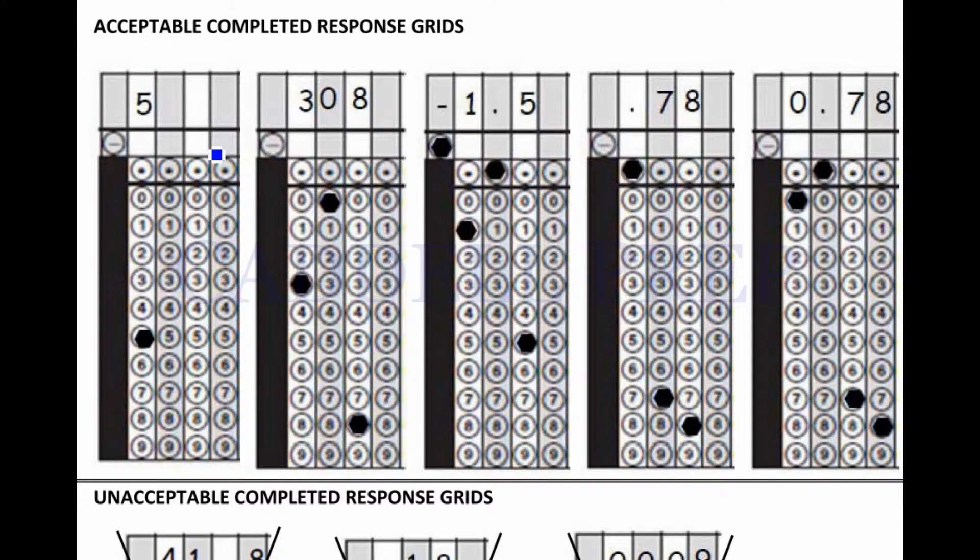So, let's look at how to fill in the answer choices. If the answer is five, we're going to put it in the first line or the first column where we could write a number. We're going to write the number five and then bubble in the number five.